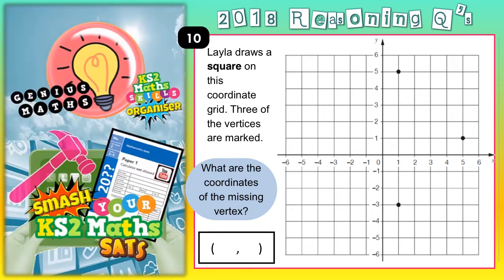Layla draws a square on this coordinate grid. Three of the vertices are marked. Remember, vertices is just a posh word for corners. If you've got one corner, it's called a vertex. If you've got more than one corner, they're called vertices. That's why it says vertex and vertices.